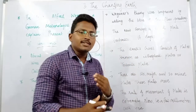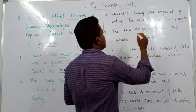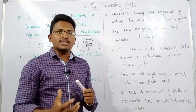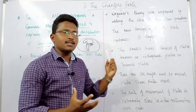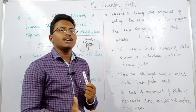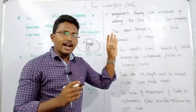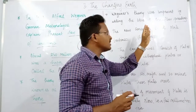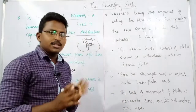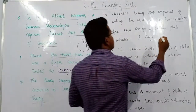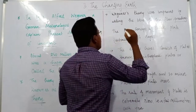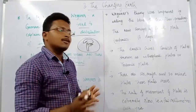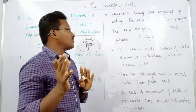Wegener's theory was further improved by another idea known as sea floor spreading, which says that the floor of the sea is always moving. By combining Wegener's Continental Drift Theory with sea floor spreading, we get the concept known as Plate Tectonics. This plate tectonics theory explains some very important features about the Earth.